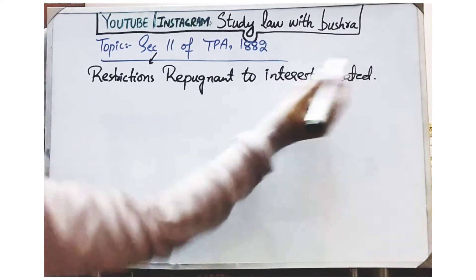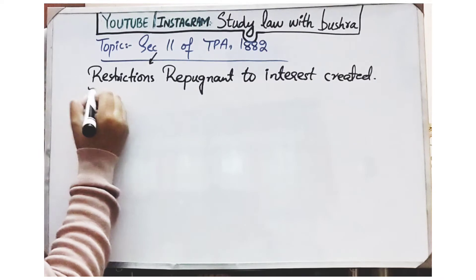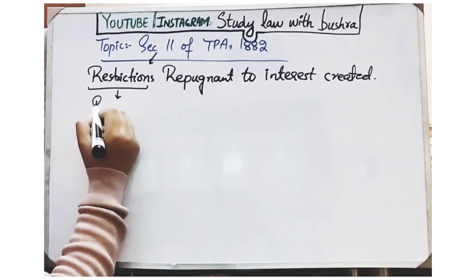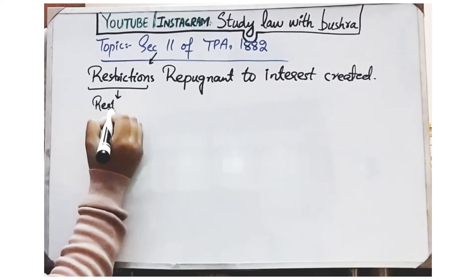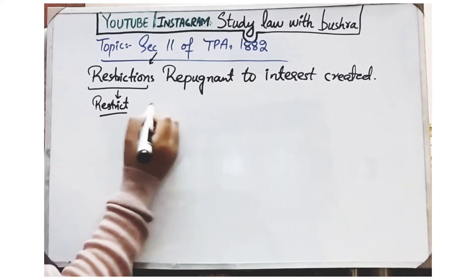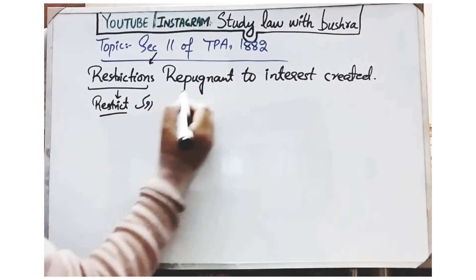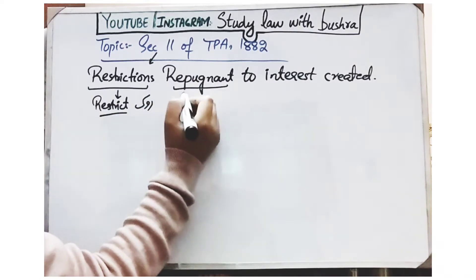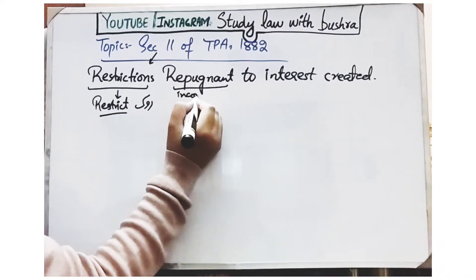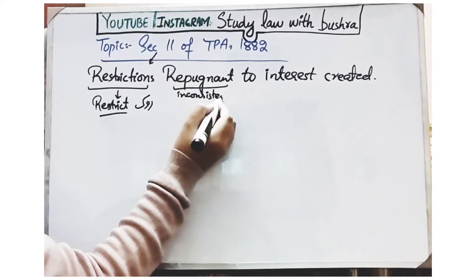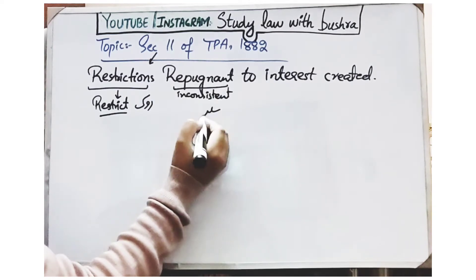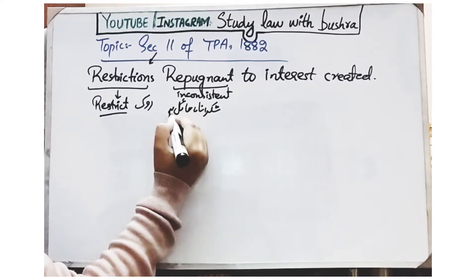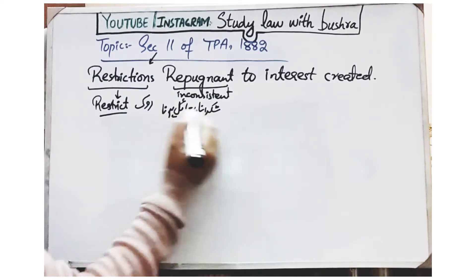Now if we understand this title, the first word is 'restriction' — meaning you are restricting someone, stopping someone, imposing a prohibition. The second word is 'Repugnant'. The basic meaning of repugnant is that something is inconsistent, something is against. But here, repugnant means to clash — meaning to become an obstacle, to stand in the way of something.